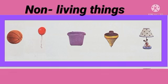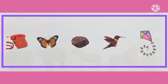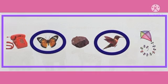Now see the next picture: telephone, butterfly, stone, bird, kite. From this picture, butterfly and bird are living things. They can move and breathe. The rest are non-living things.